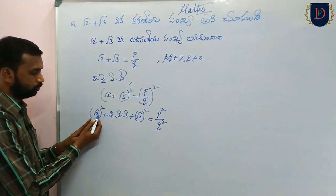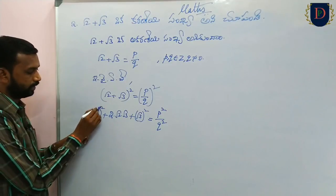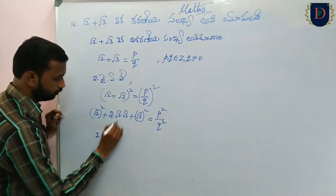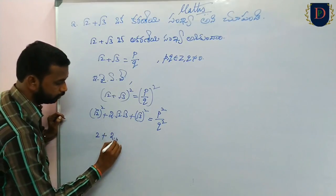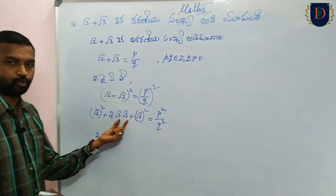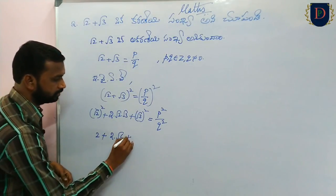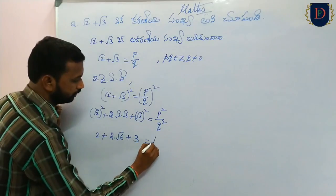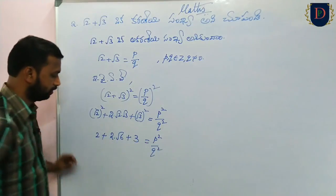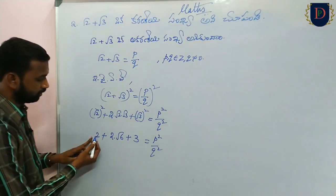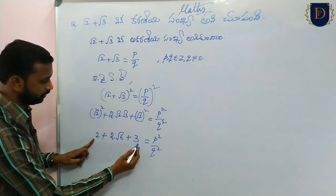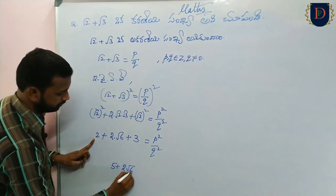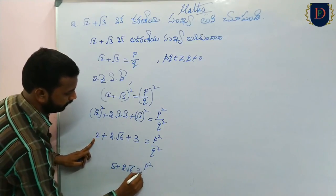Root 2 whole square gives 2. So we get 2 plus 2 into root 2 into root 3, and root a times root b equals root ab, giving us root 6. Root 3 whole square cancels to give 3. So we get 2 plus 3, which is 5. Therefore: 5 plus 2 root 6 is equal to p squared by q squared.